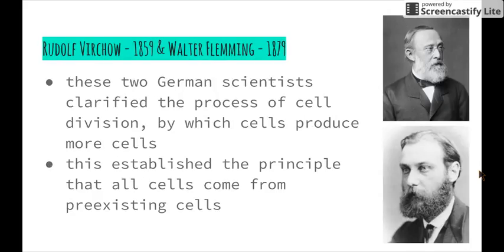Then lastly, we have Rudolf Virchow and Walter Fleming. These two German scientists clarified the process of cell division — how cells went from one cell to multiple cells. This established the principle that all cells came from pre-existing cells. Basically what they observed was mitosis taking place under the microscope.